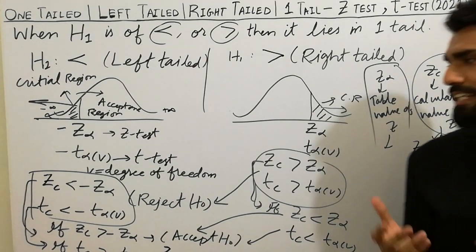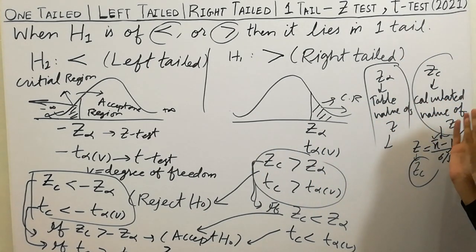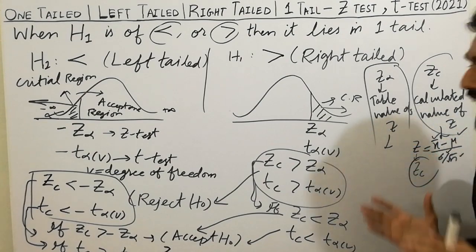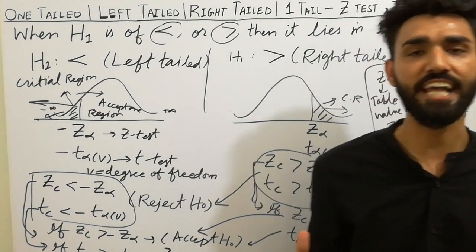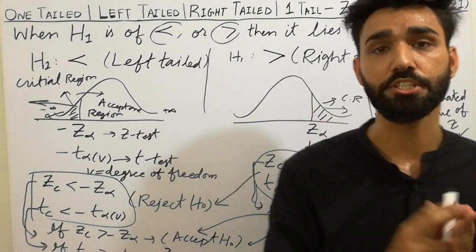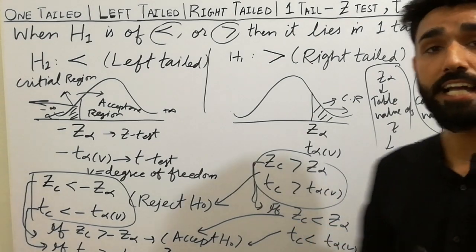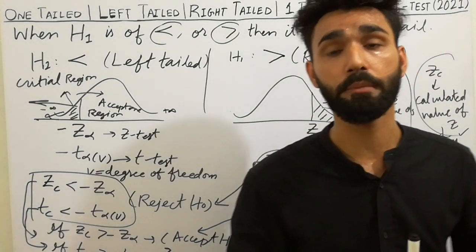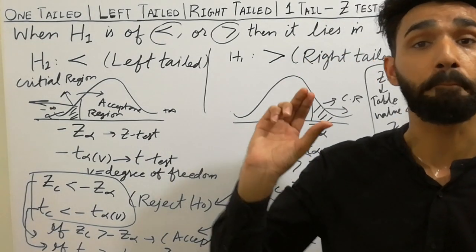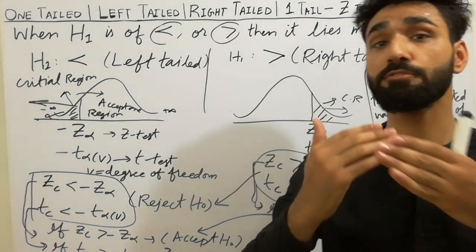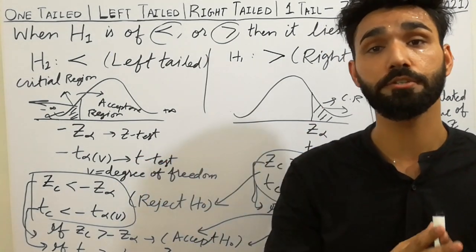I hope you have cleared the concept about one tail, left tail, right tail, and how to check the z-test and t-test in hypothesis testing. Thanks for watching. If you like this video, please subscribe to my YouTube channel and press the bell icon to get notifications for upcoming lectures. Goodbye.